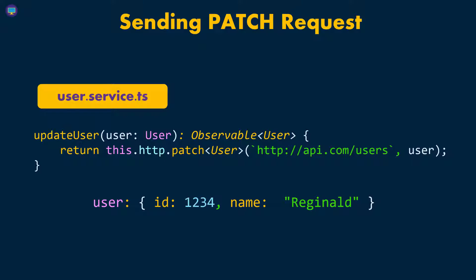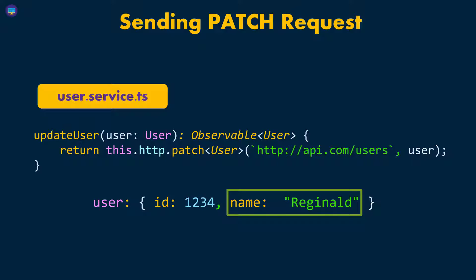With PATCH, our data can look like this: we send the user ID and then just change the name — we don't have to send all the rest of the data. Because we're doing a PATCH, what the system is going to do is just replace the properties that we send on that specific resource. So here we're sending the ID to identify the specific resource on the server, and then saying 'update that name.'